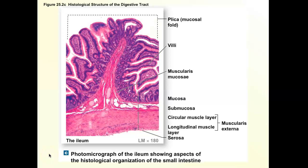Before we move on to the digestive tract itself, let's look at this histology slide of the layers of the alimentary canal. In this last unit — digestive system, urinary system, reproductive system, and endocrine system — you're going to have histology images come back. There's going to be a lot of histology that you're going to be responsible for, and one of the slides is this one.